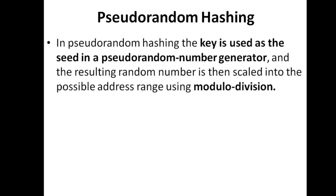The next technique is pseudo-random hashing. A pseudo-random function generates a pseudo-random number. There are many pseudo-random number generation algorithms — each produces a random number for a given seed number. When you provide a key as the seed, the algorithm generates a pseudo-random number. Then modular division is applied to confine that number within the range of valid addresses.